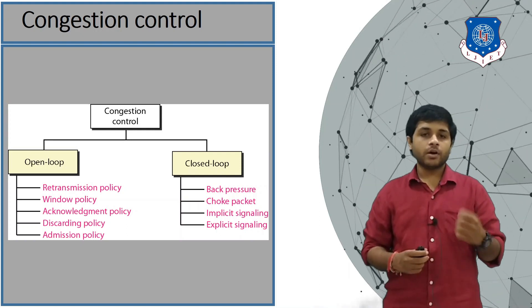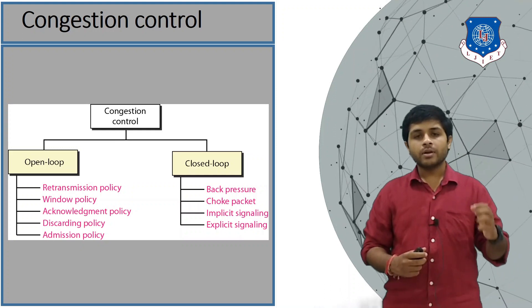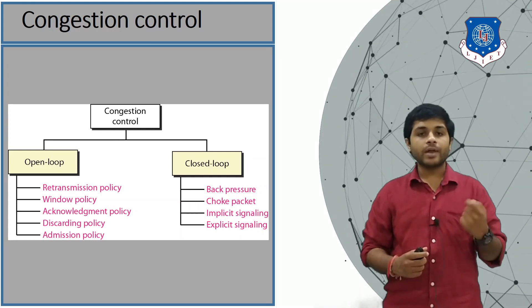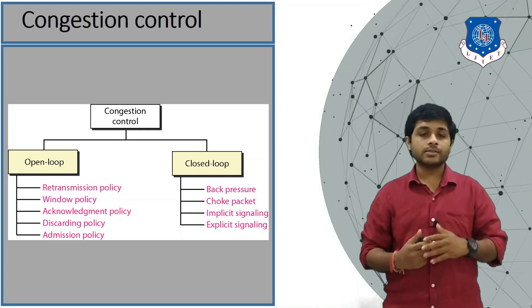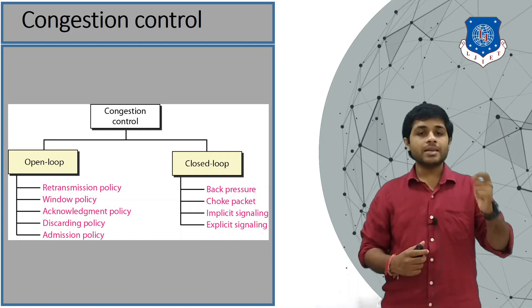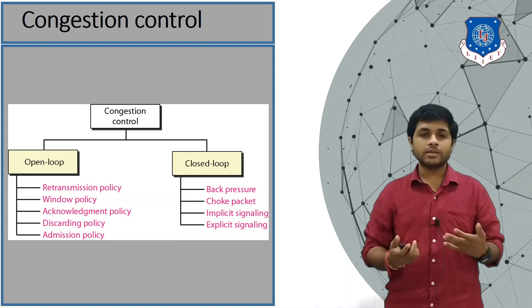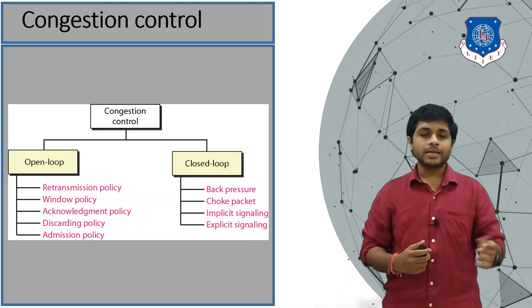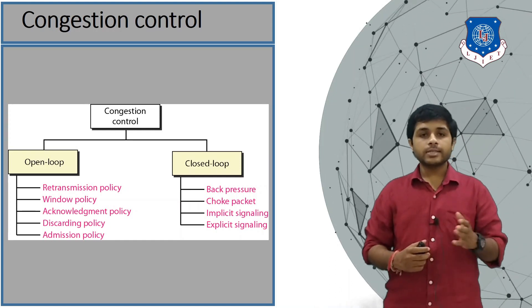Then there is the acknowledgement policy. Acknowledgement can be of two types: the sender can receive acknowledgement for every packet it has sent, or it can receive acknowledgement for every 5 or 10 packets. If the sender receives acknowledgement for every single packet, there will be many packets traveling back and forth between sender and receiver. But if it receives acknowledgement per 5 packets, there will be fewer packets traveling in the link. This is called cumulative acknowledgement.